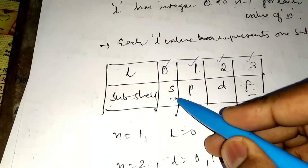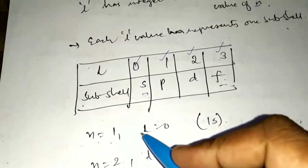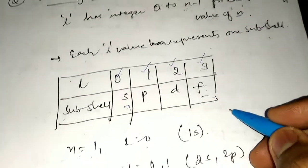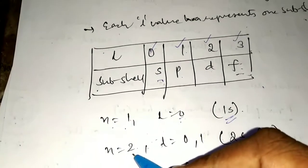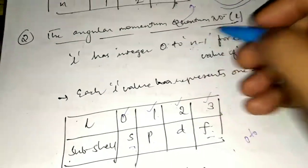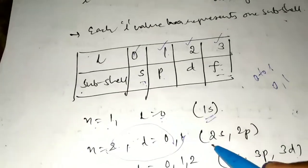In the subshells we can find orbitals. For N=1, L ranges from 0 to N-1, so L=0, which means S. We write this as 1S. For N=2, L ranges from 0 to 1, giving values 0 and 1 — that is 2S and 2P. Each L value represents one subshell.